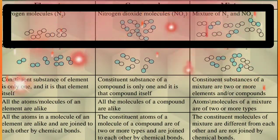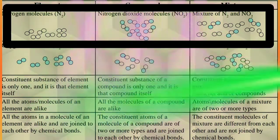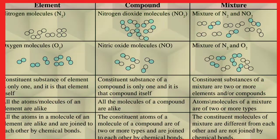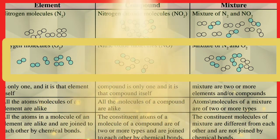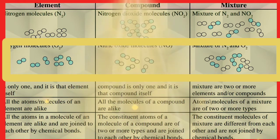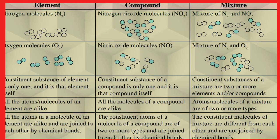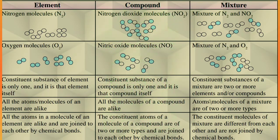Element example: N₂ — that is nitrogen molecule. Compound example: nitrogen dioxide molecule, that is NO₂. Mixture: a mixture of N₂ and NO₂. For oxygen: O₂ is an element. Nitric oxide (NO) is a compound. A mixture of N₂ and O₂ is a mixture. The constituent substance of an element is only one — element itself. The constituent substance of a compound is only one — that compound itself. A mixture has two or more elements or compounds. In elements, all the atoms or molecules are alike. In a compound, all the molecules are alike. But in a mixture, atoms or molecules are of two or more types.